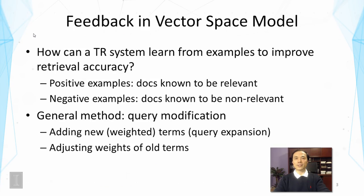As we have discussed before, in the case of feedback, the task of a text retrieval system is to learn from examples to improve retrieval accuracy. We will have positive examples — documents assumed or judged to be relevant, or documents viewed by users. We also have negative examples — documents known to be non-relevant, or documents that are skipped by users.